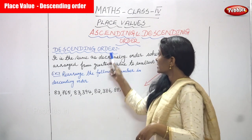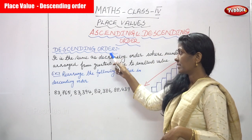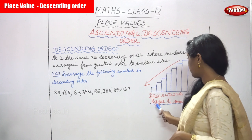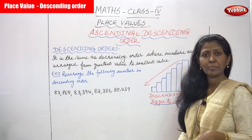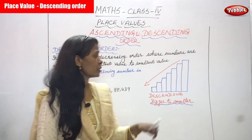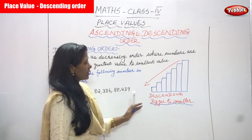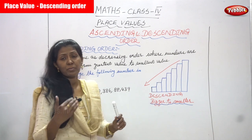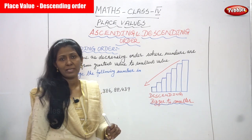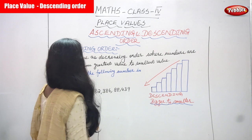Now we are going to see what descending order is. Descending order means bigger to smaller number. We start with the bigger number and end with a smaller number — that is called descending order.